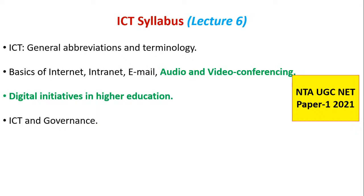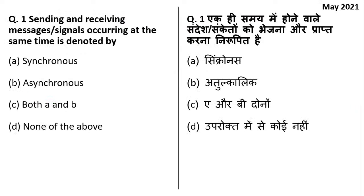Audio and video conferencing and digital initiatives in higher education — this part was left for our syllabus, so we are going to take this today. Our first question for today is: sending and receiving messages and signals occurring at the same time is denoted by — synchronous, asynchronous, both A and B, or none of the above.